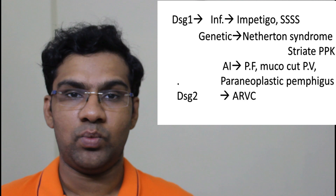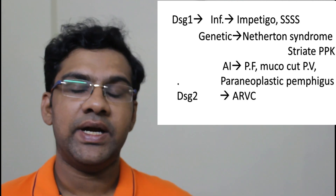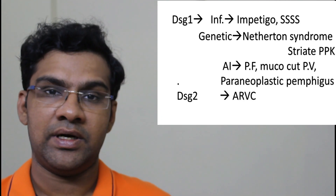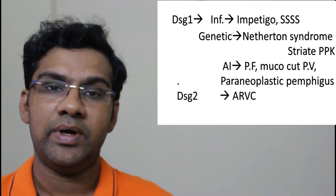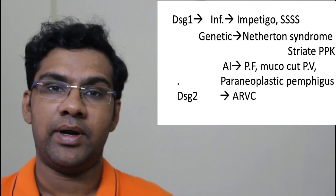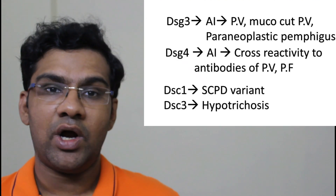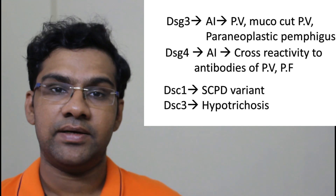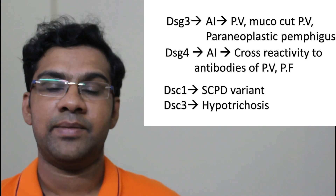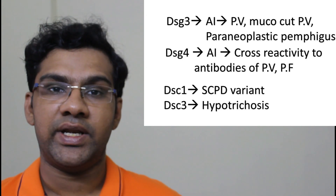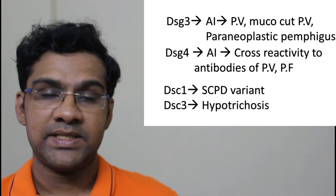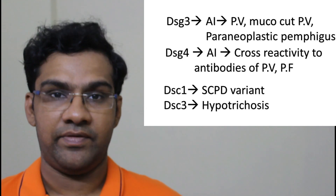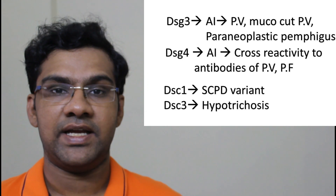Desmoglein 2 is majorly present in cardiac and myoepithelial cells, so any damage to desmoglein 2 can lead to arrhythmogenic right ventricular cardiomyopathy. Desmoglein 2 is not much needed for cutaneous adhesion. Infections with adenoviruses may target desmoglein 2, which is present in respiratory and urinary epithelium. Desmoglein 3 is majorly targeted during autoimmune conditions like pemphigus vulgaris, mucocutaneous pemphigus vulgaris, and paraneoplastic pemphigus.